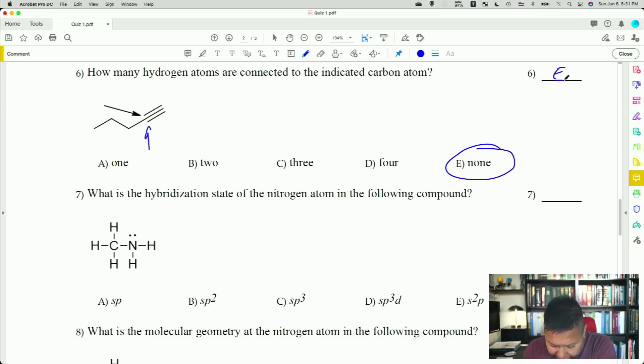Next question. What is the hybridization state of the nitrogen atom in the following compound? So how do you figure out the hybridization state? Easy as pie. Count up the number of electron domains, both bonding domains and lone pair domains. We have one, two, three, four. That's the three bonds right there plus the lone pair. That gives you four bonding domains. That means it's a steric number of four. One of them has to be an S orbital. The other three have to be P orbitals. So that gives you the sp3 hybridized nitrogen.